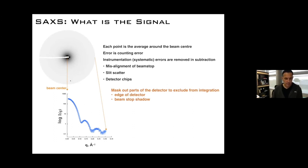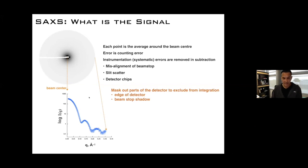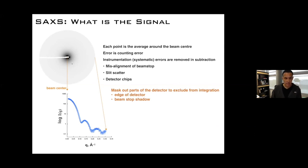When you're looking at the detector image, you go around in a circle and take the average around the center of the beam stop to get a single point. You keep going further out and start to see features in the subtracted SAXS curve. This is a subtracted SAXS curve — you wouldn't have a subtracted image.